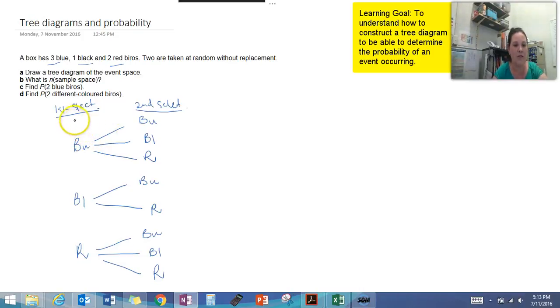So we've got three blues, so that means it's three out of six because there were six biros in total. This one we only had one out of six and two out of six. Now all of these add up to six out of six so that's one. So there's one chance of selecting one of those.